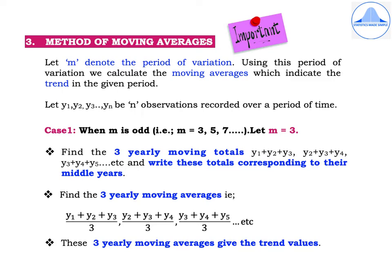I will take a particular case where m is equal to 3. The first step is to find out the three-yearly moving totals: y1 plus y2 plus y3, then y2 plus y3 plus y4, then y3 plus y4 plus y5, and so on, writing these totals corresponding to their middle years. Next, we find the three-yearly moving averages by dividing each total by 3, and these moving averages give us the trend values.